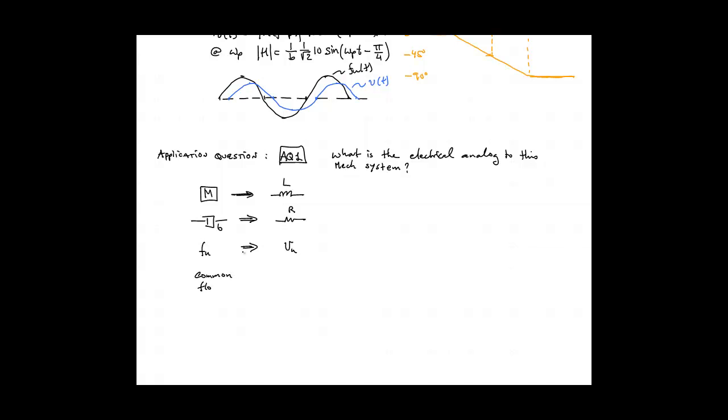And the configuration mechanically is common flow, meaning velocity of the mass is equal to velocity of the viscous damper. And on the electrical side, this translates into common current or series connection, where the current through the inductor is equal to the current through the resistor. So these are in series.